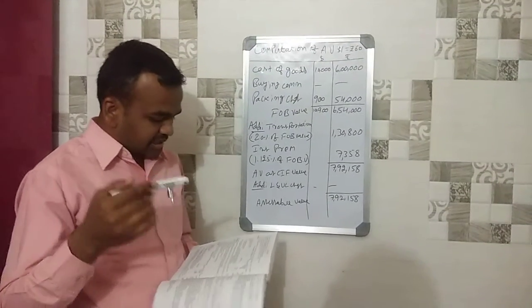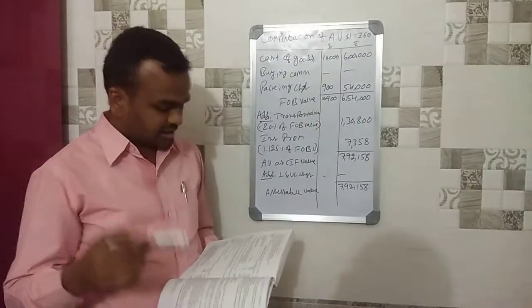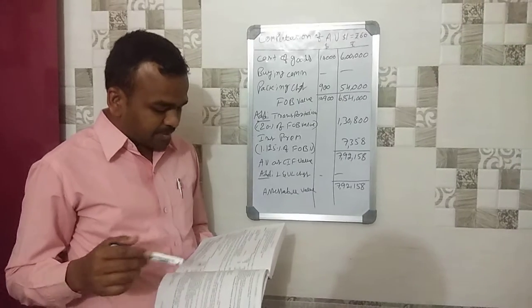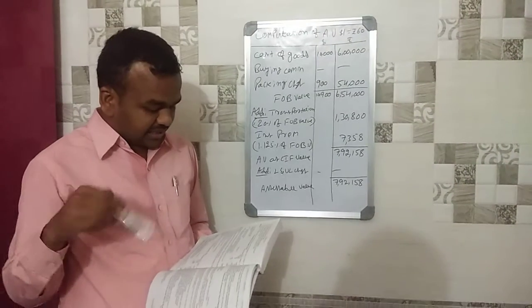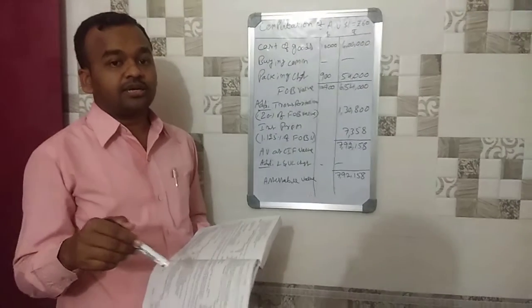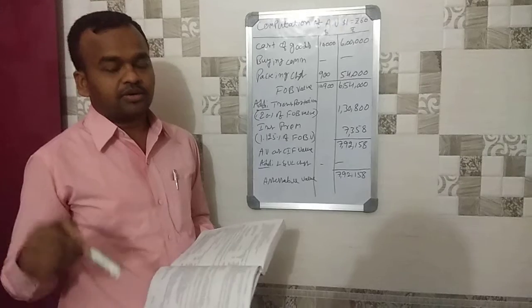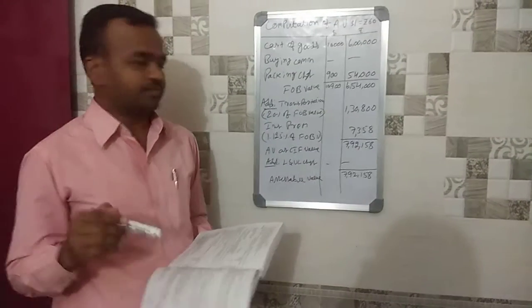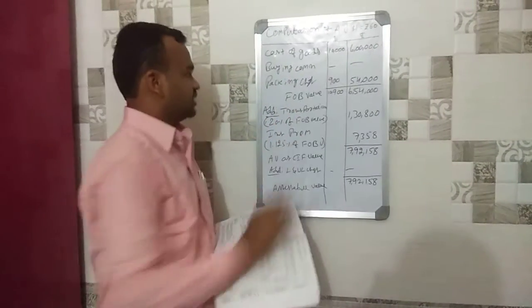Now let us observe one by one. First, buying commission — this is paid by the Indian dealer to their agent for import-related work. Import-related buying commission is to be deducted, so we exclude the buying commission amount from the assessable value calculation.